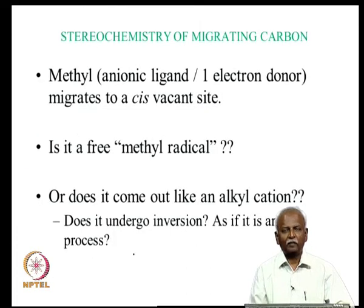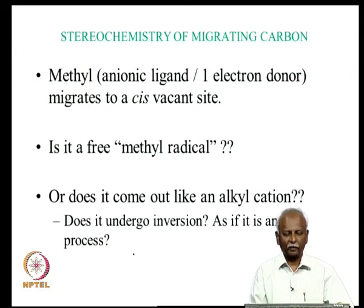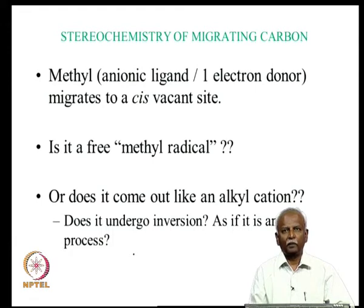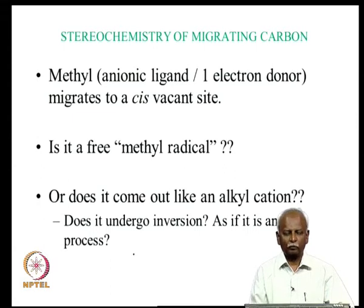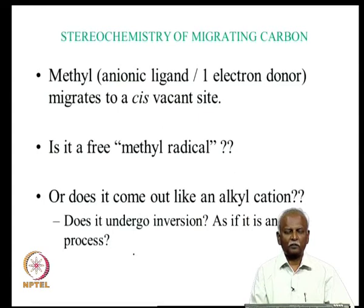So we have answered some questions about the migration reaction. In today's topic we are going to talk about the stereochemistry of the migrating carbon. A methyl group can migrate to a carbon monoxide as an anionic ligand, and if it does so, it would migrate with a pair of electrons. In the neutral method of electron counting, we consider that as a 1-electron donor, but if you consider it as a 2-electron donor, it is an anionic ligand, which seems to be the more appropriate method. We will use the ionic method.